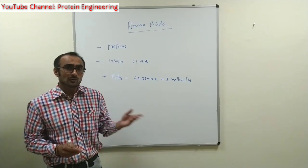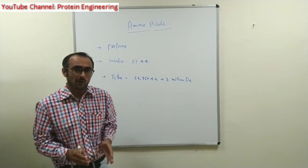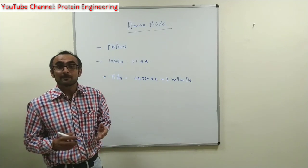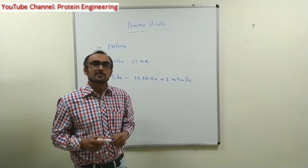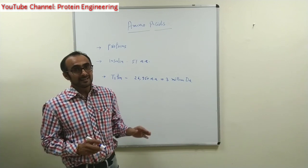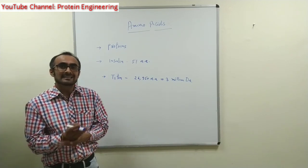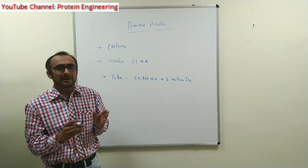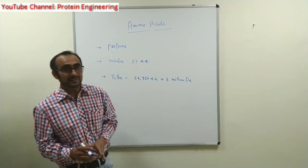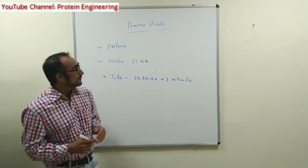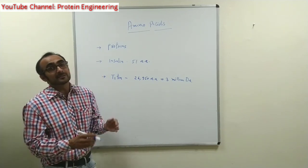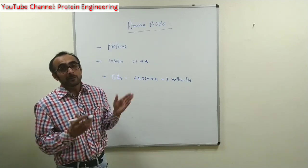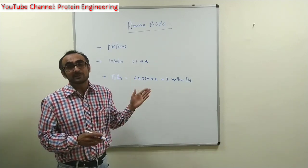Two consecutive amino acids come together and form a specific covalent bond called a peptide bond. So basically proteins are also known as polypeptides. The sequence of a protein is fixed — it is very specific and the number of amino acids in a protein is also specific. The sequence of amino acids in a protein determines the function of that protein. So in order to change the function of a protein, the amino acid sequence can be altered.